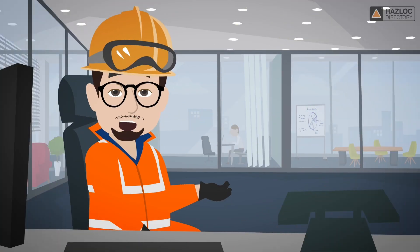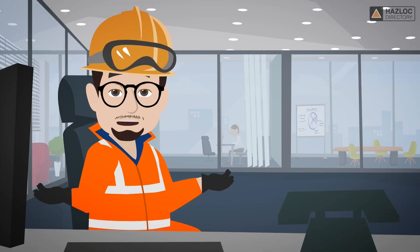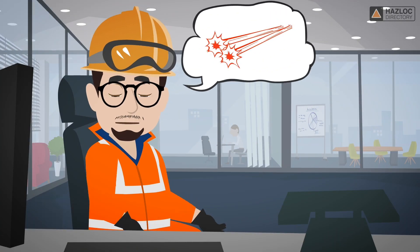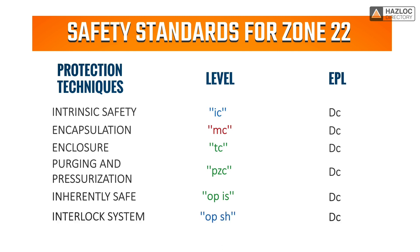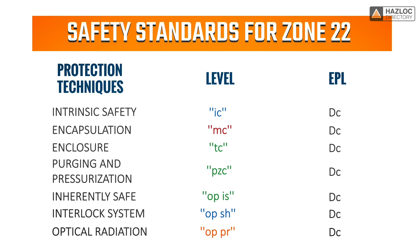Additionally, equipment with optical radiation features such as lasers can be installed in Zone 22 if the optical power is inherently safe using OP-IS protection, or an interlock system complying with OP-SH protection, or using protected optical radiation complying with OP-PR, with an equipment protection level, or EPL, of DC.